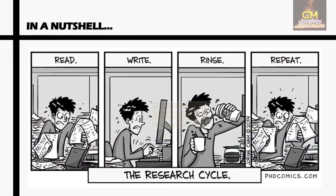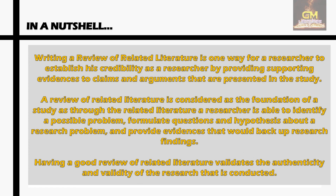In a nutshell, writing a review of related literature is one way for a researcher to establish credibility by providing supporting evidence to claims and arguments presented in the study. A review of related literature is considered the foundation of a study — through related literature, a researcher is able to identify a possible problem, formulate questions and hypotheses about a research problem, and provide evidence that would back up research findings. Furthermore, having a good review of related literature validates the authenticity and validity of the research currently being conducted.